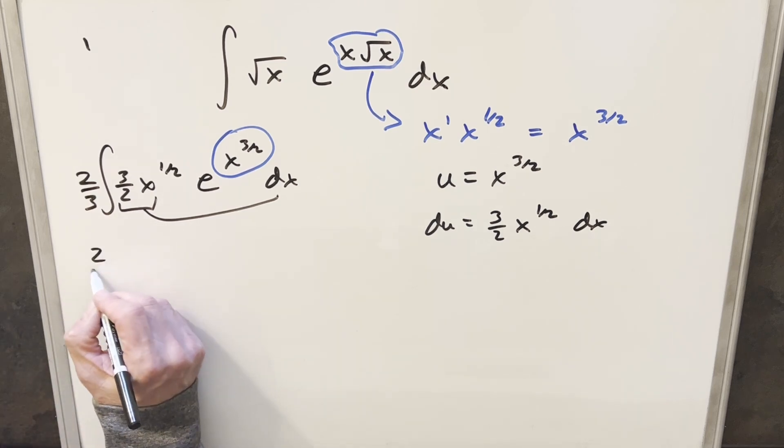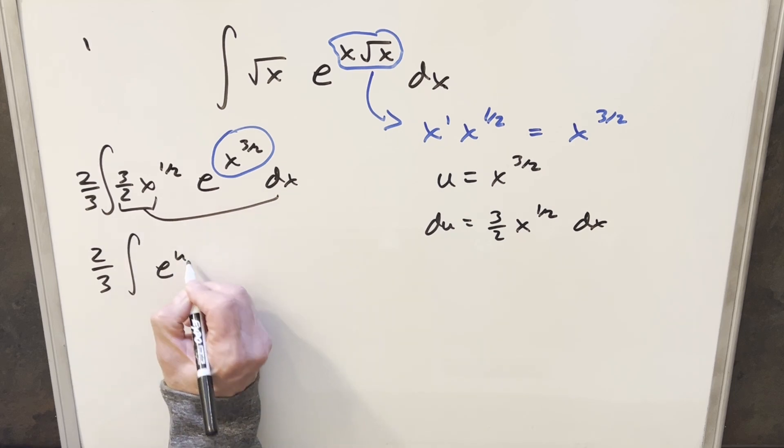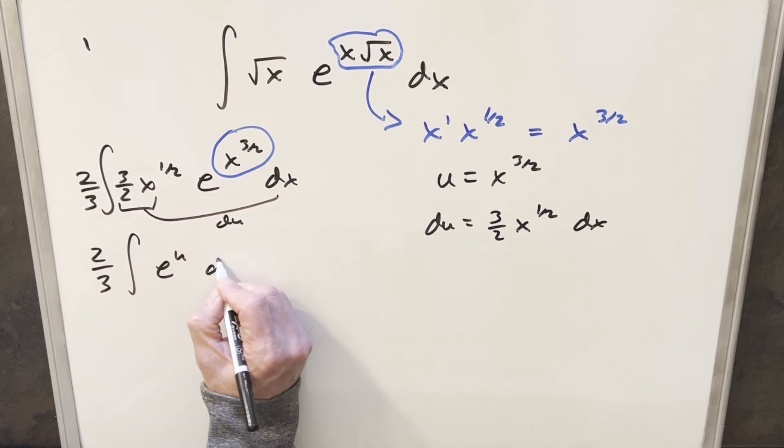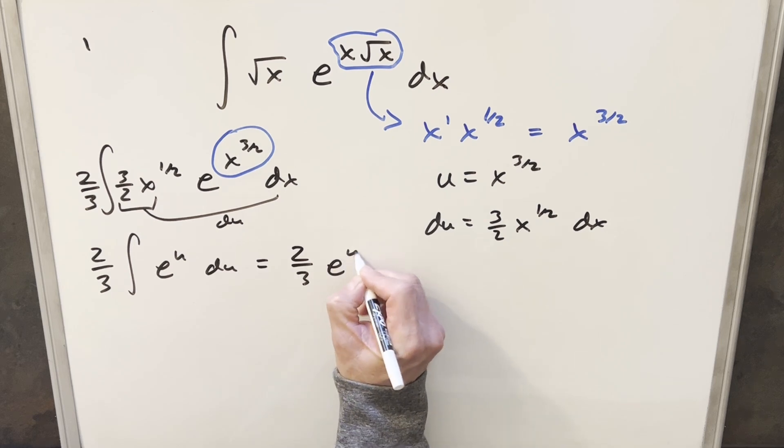Then making this substitution, we'll have 2 thirds in front. This piece is going to become just e to the u, and everything else, this whole stuff, is du. So I'll just go ahead and integrate this. So integral of e to the u is going to be just e to the u.